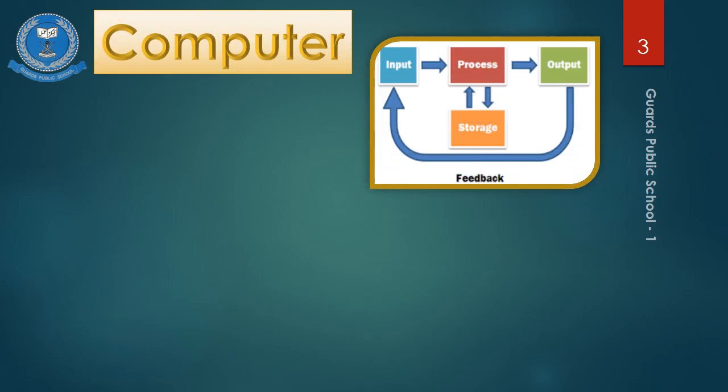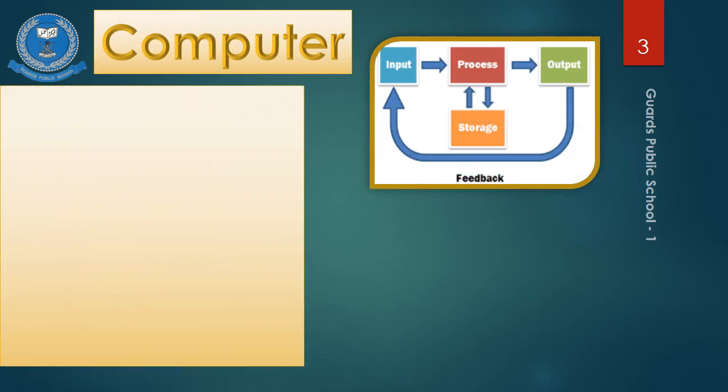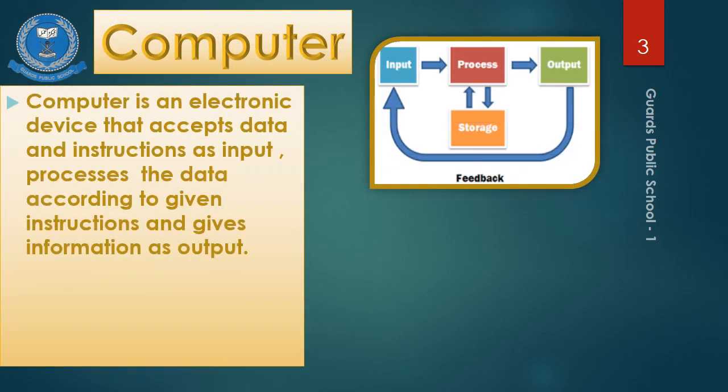Here is the basic definition of computer. Computer is an electronic device that accepts data and instructions as input, processes the data according to the given instructions, and produces information as output.